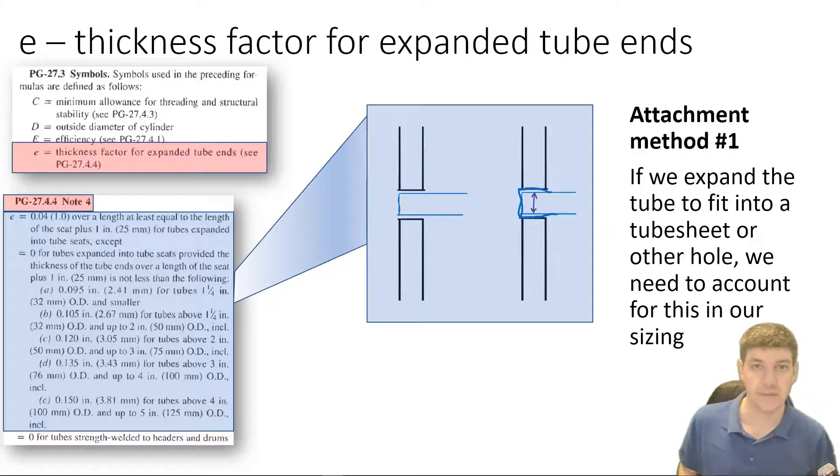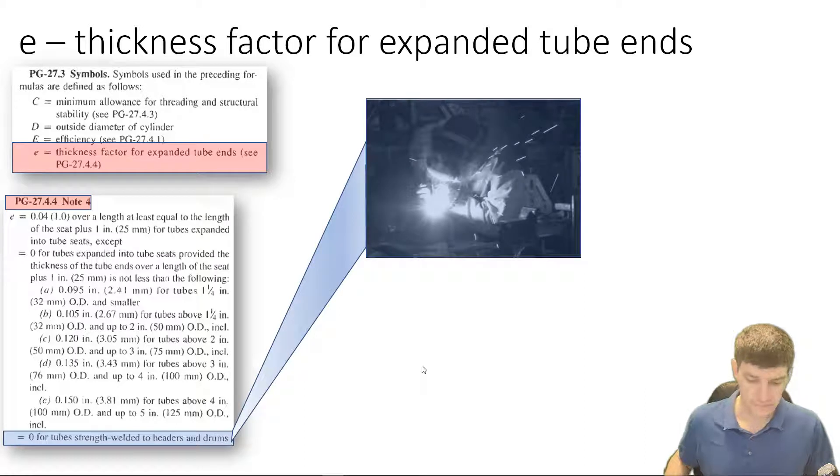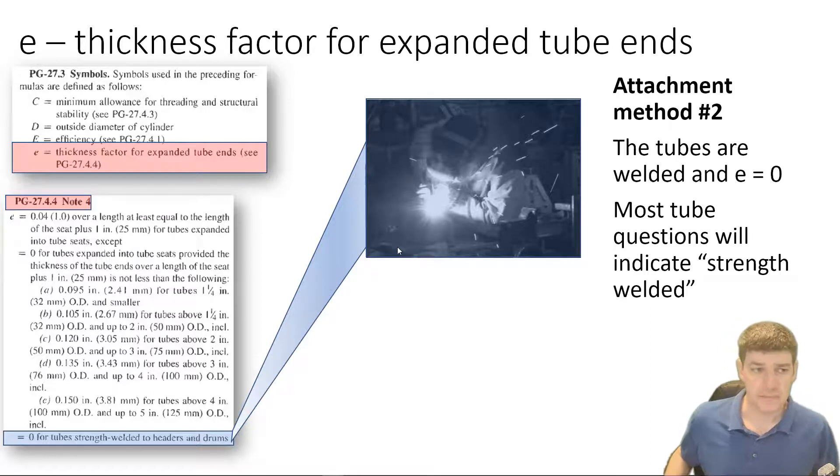The last statement in this section talks about our next attachment method. And our next attachment method is when we weld tubes. So, the tube's attachment is by what's known as strength welding, or welded attachment to the header, or the drum, or wherever we're attaching it to. And in this case, E, we don't add any extra thickness because we don't weaken the tube. And most of your questions are going to indicate strength welded as the connection. So, this is the most typical application of this.